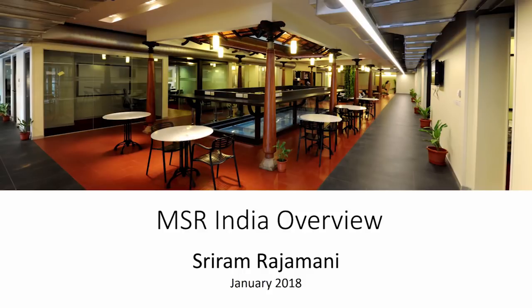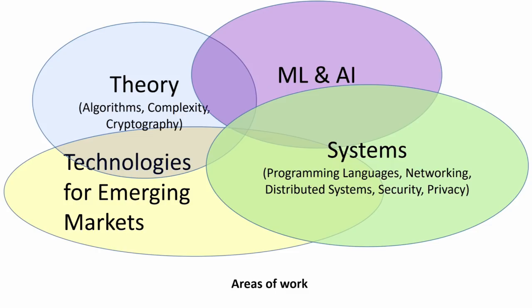I am going to give you a brief overview of work done in Microsoft Research India. Our work falls in four areas: theory, which includes algorithms, complexity, and cryptography; machine learning and artificial intelligence, which I'll mostly concentrate on in this overview given the inclination of this workshop; systems, a broad area including programming languages, networking, and security privacy; and a unique area called technology for emerging markets, which studies the role of technology in socioeconomic development. Our lab is very interdisciplinary, so most projects fall into more than one of these areas. For this overview, I'm going to cover projects in machine learning and artificial intelligence.